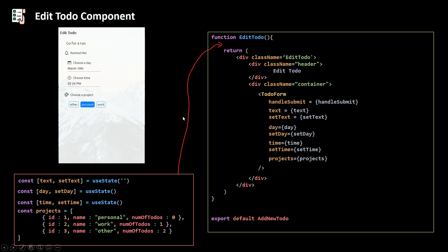One thing before we move to the code: our edit to-do needs a selected to-do. I'll talk about that in a future part. When I click on a to-do from the list I'll send that to-do to the edit to-do component, and the input, date picker, and time picker will receive their initial values from the to-do I clicked on. That's it for the logic part.